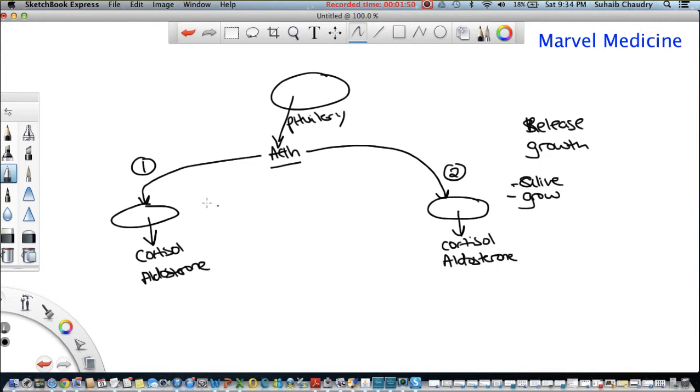Now, what happens if I have a pituitary tumor here, first scenario, a tumor that's releasing ACTH, a lot of it. I have a lot of ACTH coming through. What's it going to do? It's going to go to both sides, number one and number two, and cause a growth of these glands, right? Because what is it doing? It's making sure these cells stay alive and that they're growing at the same time.